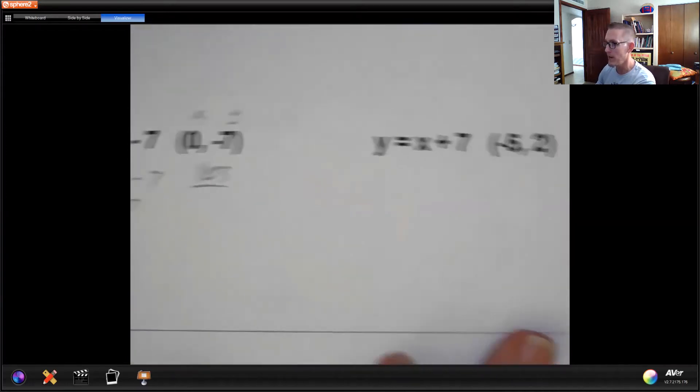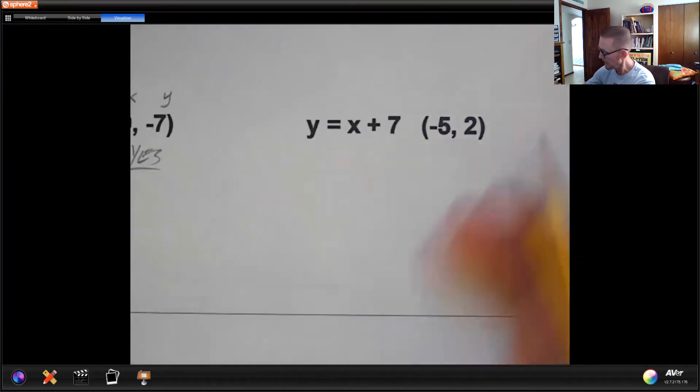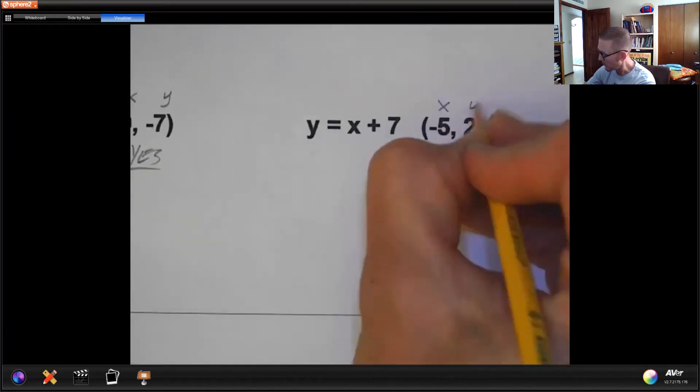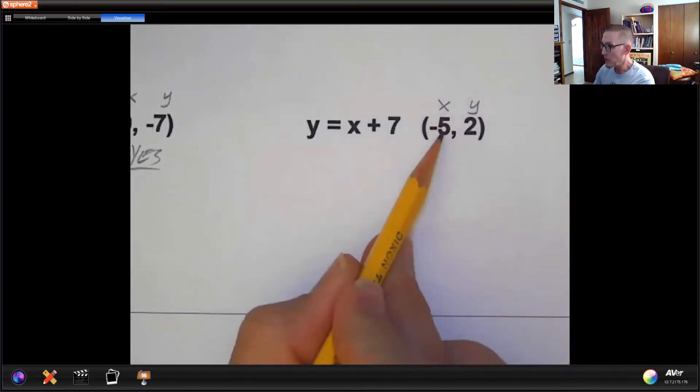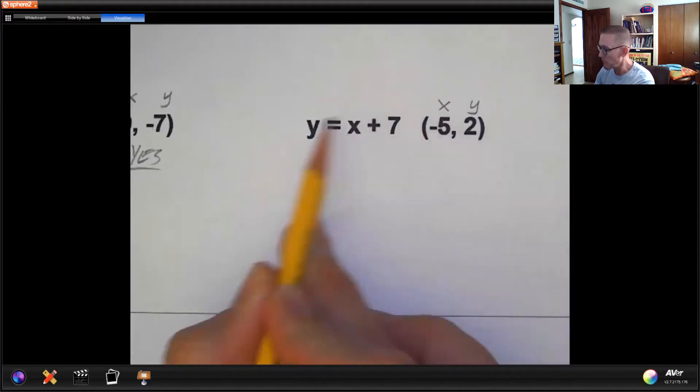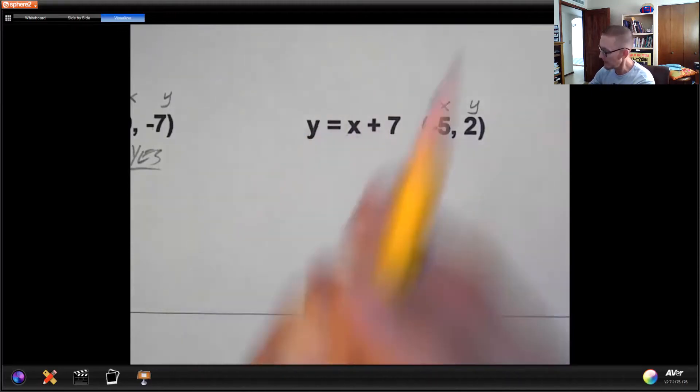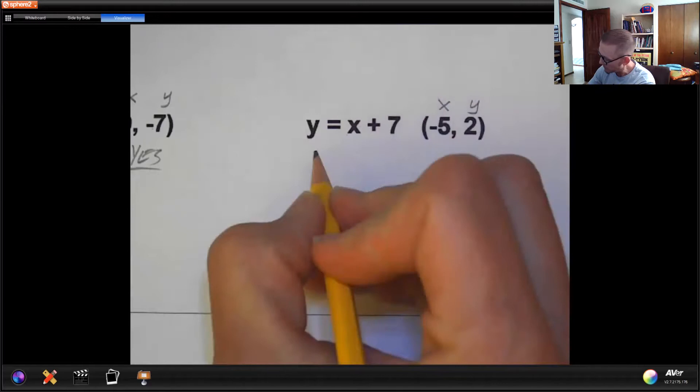Let's look at one more example here for plugging in. Here's my x comma y. Negative 5 is going to go in place of the x. And 2 will go in place of the y. And then we'll see if it makes 2 equal sides.